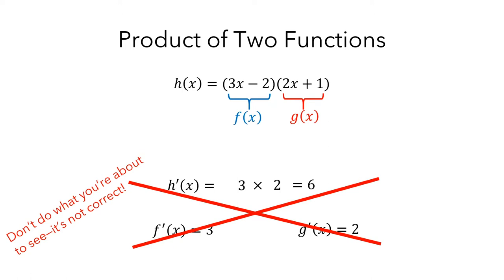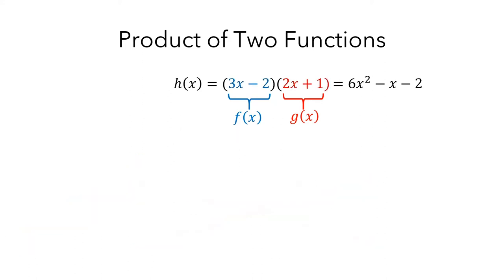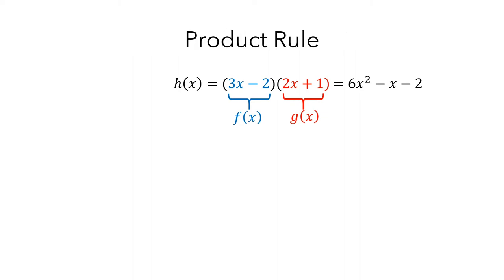If you went through and multiplied f and g, you'd see that h is 6x squared minus x minus 2, and the power rule tells us that the derivative of h is actually 12x minus 1, not 6. What we need is a method to quickly compute the derivative of a product of two functions. This is called the product rule.